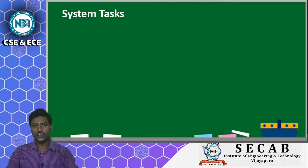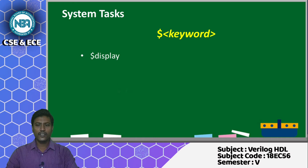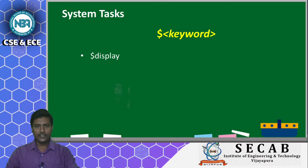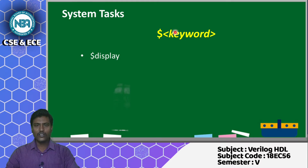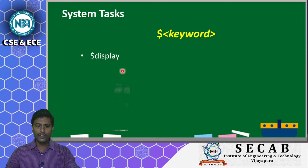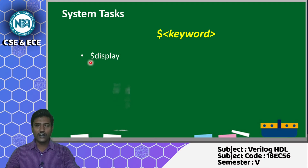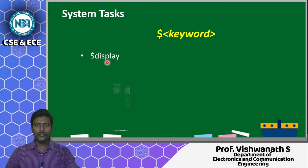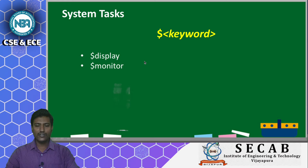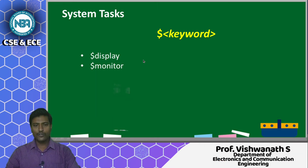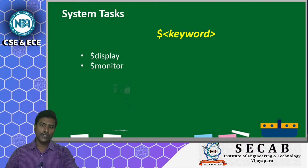Let us look at the different types of system tasks available in Verilog. One is $display. The keyword for any system task must start with a dollar symbol, followed by the keyword name. For example, the display system task is invoked by writing $display. Another system task is $monitor. Let us look at what these do and what syntax we need to write to execute $display and $monitor.